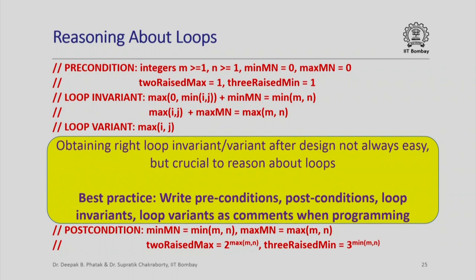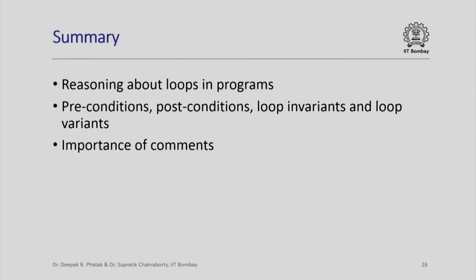Obtaining the right loop invariant or variant after completing the design is not always easy, but it is crucial for reasoning about loops. The best practice is to write preconditions, postconditions, invariants, and variants as comments when programming. In summary, in this lecture we have seen how to reason about loops in programs by looking at preconditions, postconditions, loop invariants, and loop variants, and the importance of expressing these as comments.